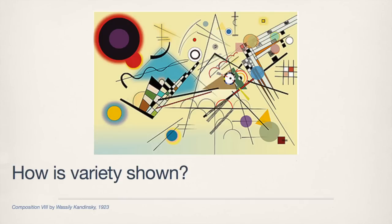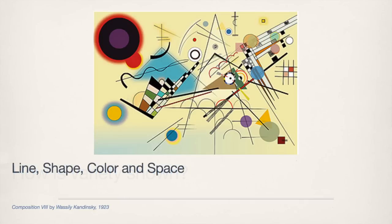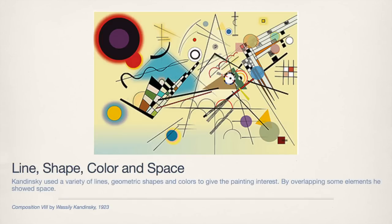How is variety shown in this piece? Line, shape, color, and space. Kandinsky used a variety of lines, geometric shapes, and colors to give the painting interest. By overlapping some elements, he showed space.